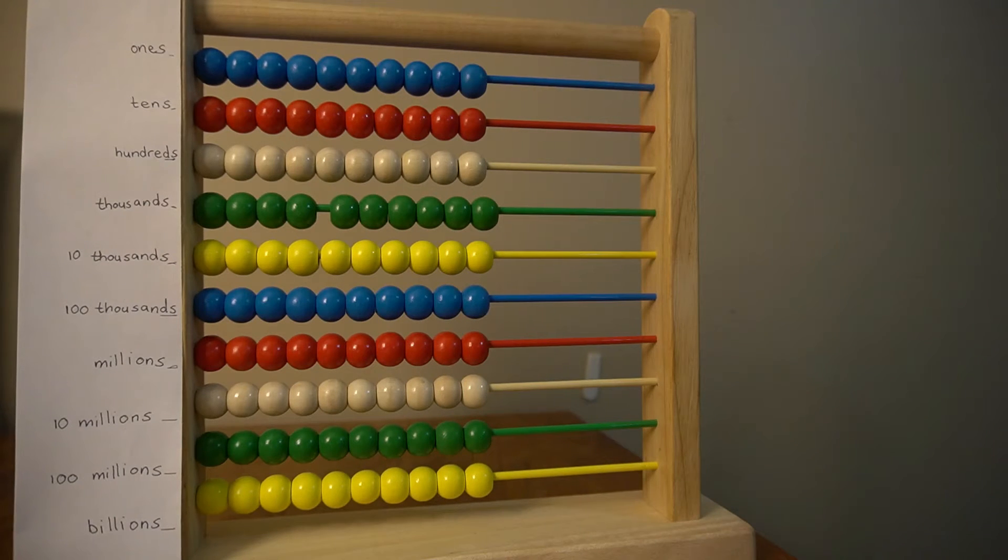Now how does the abacus help me understand place values? Let's start counting the ones row.